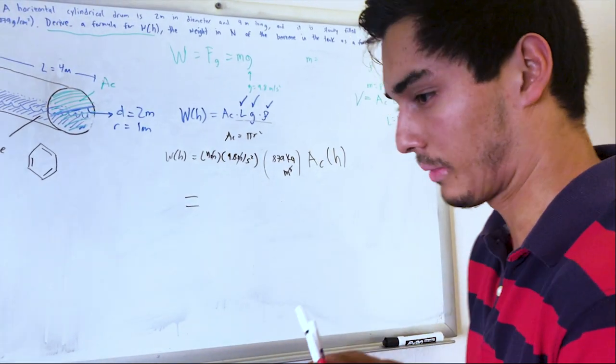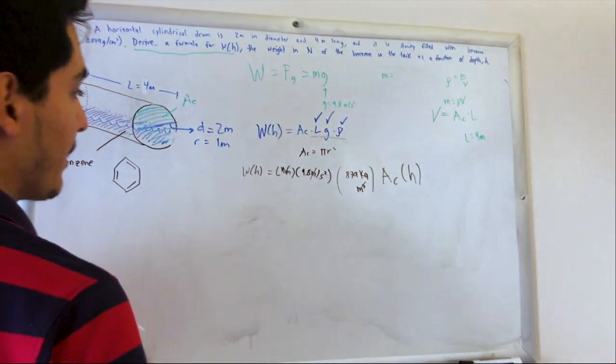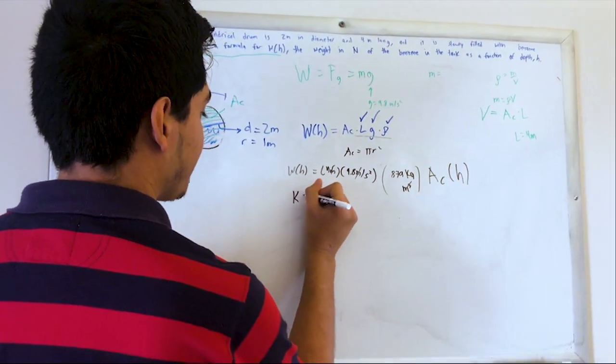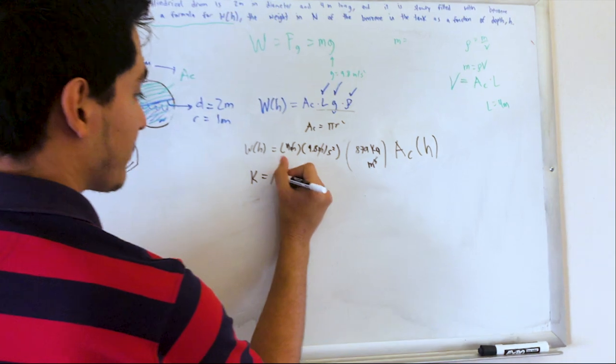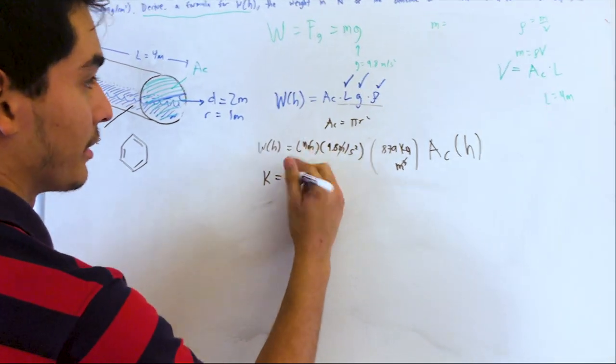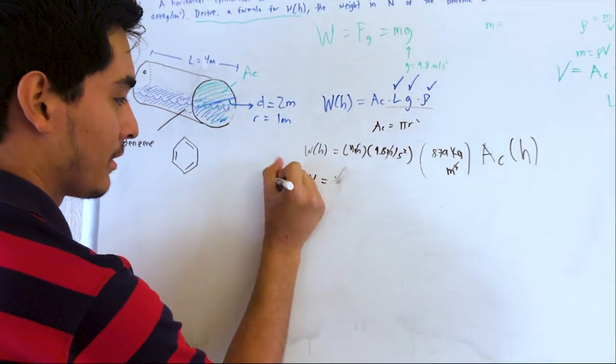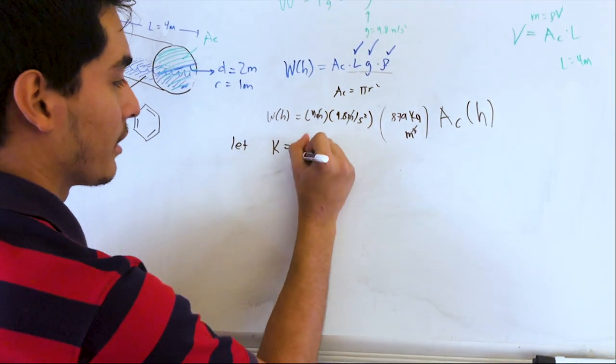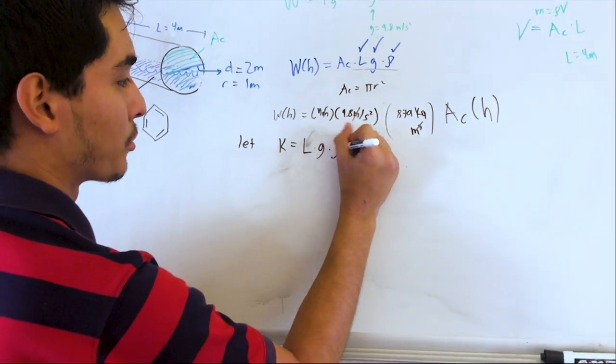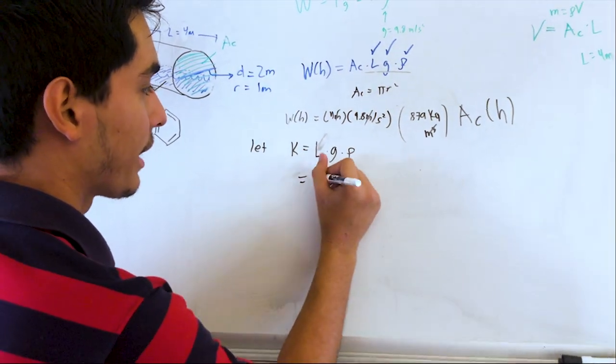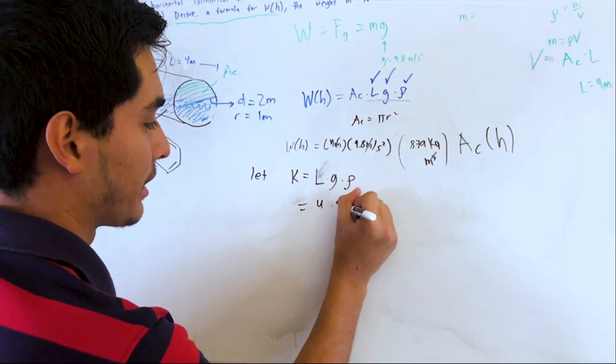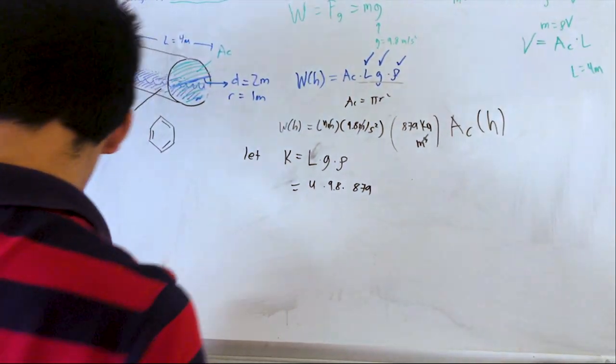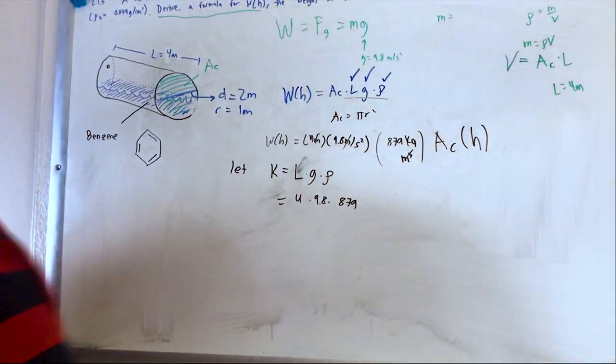And multiply this by the cross-sectional area as a function of height. So we're gonna get some constant. Let's call the constant, let's say the constant is, let's say the constant is, let this constant length times gravity times rho. And again, that's just gonna be the 4 times the 9.8 times the 879, alright? So let's try that out.